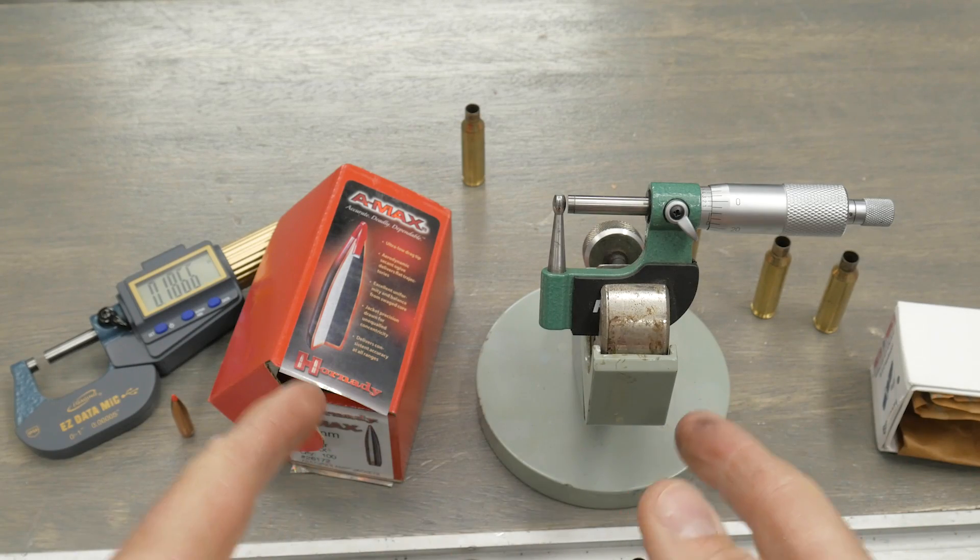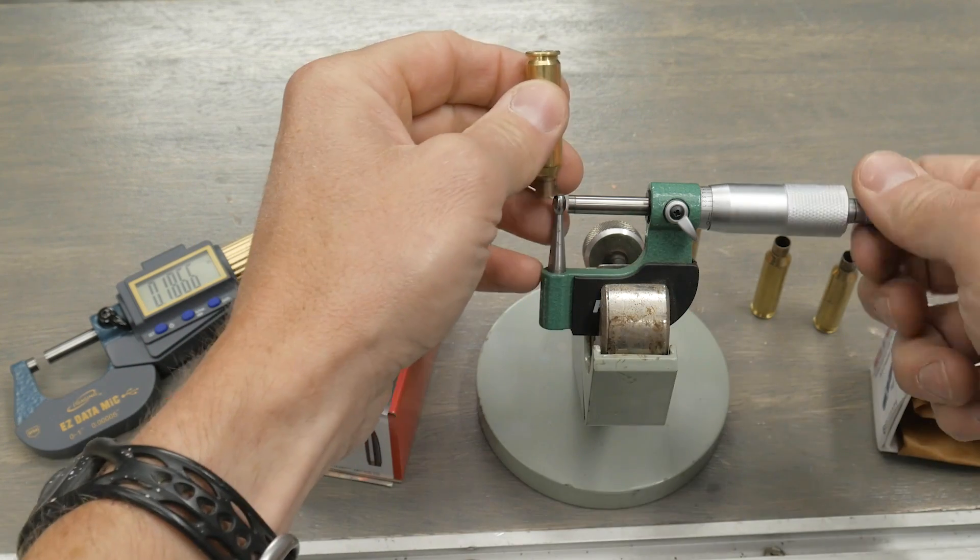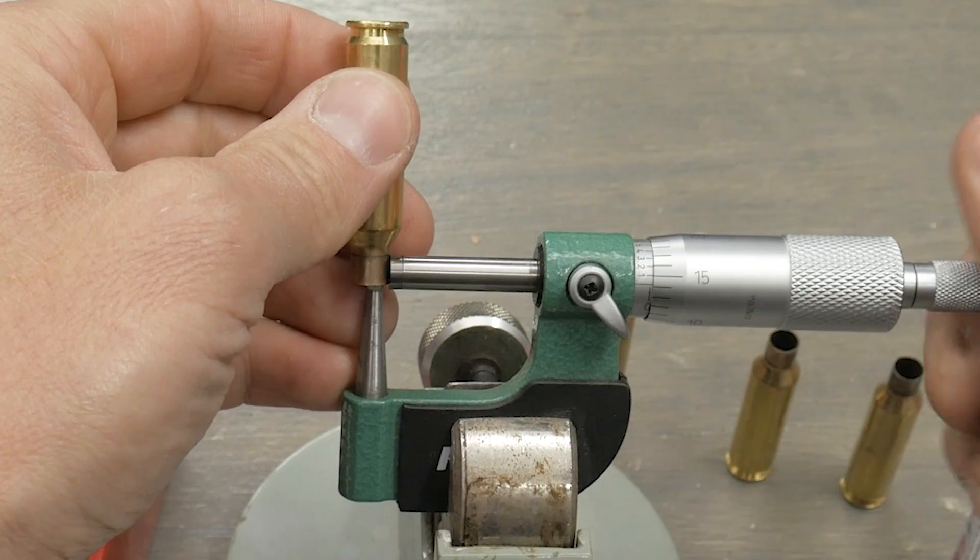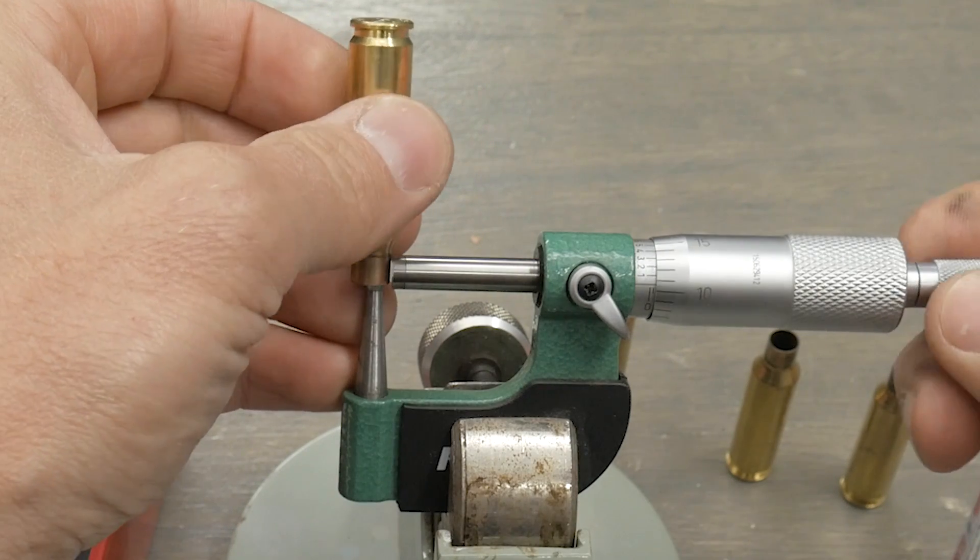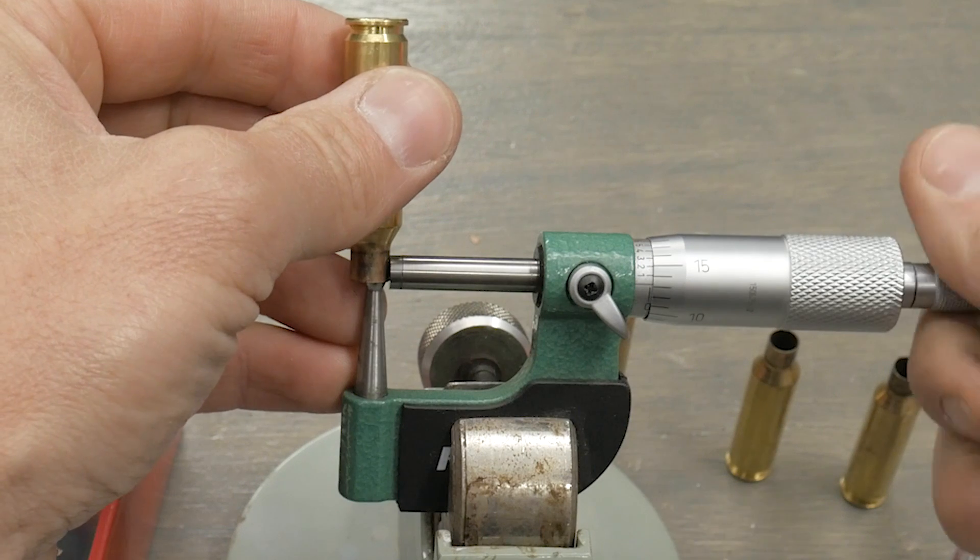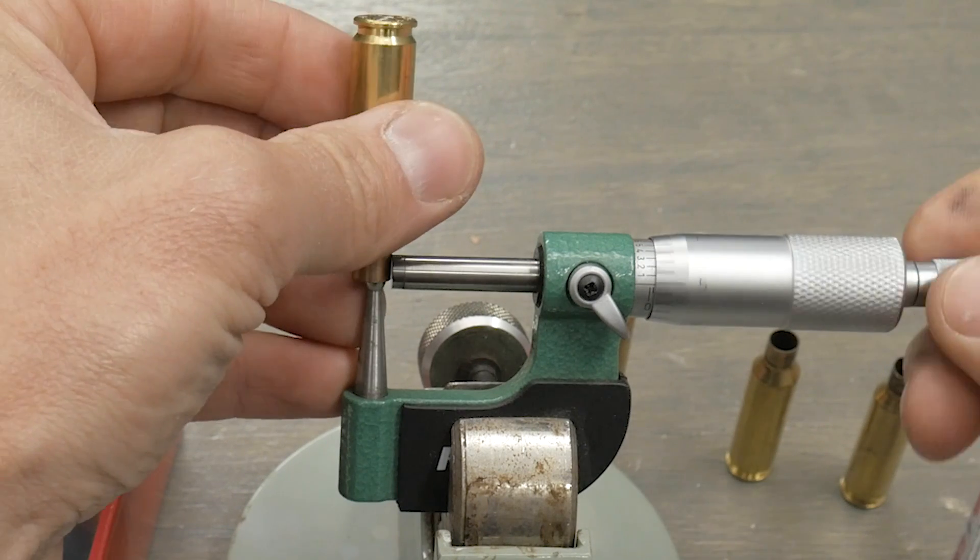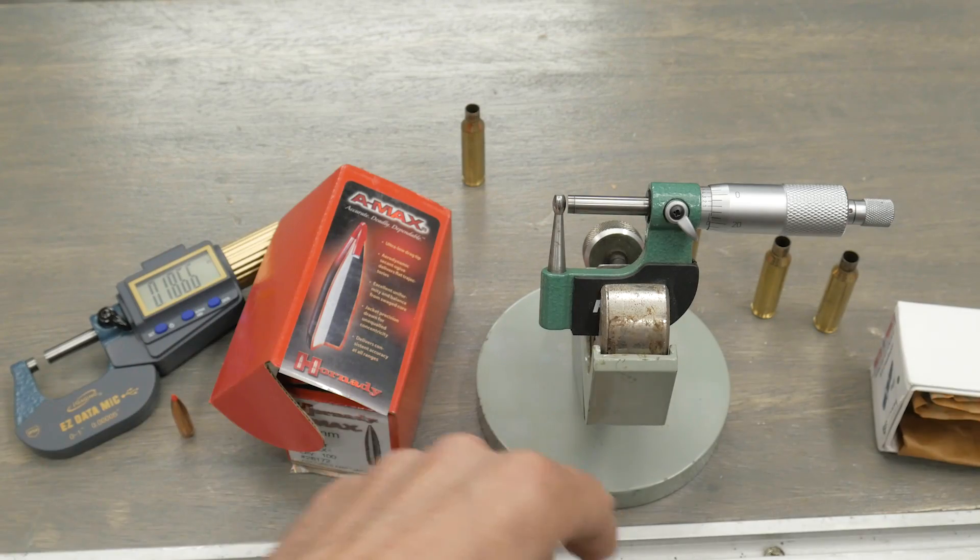So the first thing we need to know is what diameter bushing we're going to use. And to do that, we need to first measure case neck thickness. I'm using a ball micrometer, RCBS unit here, and some Starline once-fired 65 Creedmoor brass that we're going to be sizing. Looks like we're at 14, it's varying just over and under 14. So I'm going to call that 14.